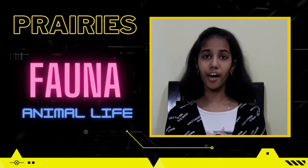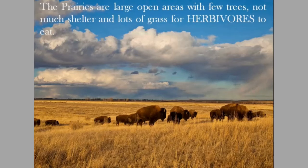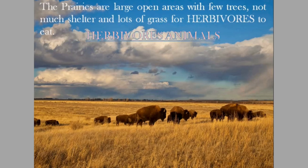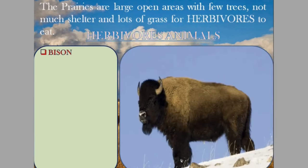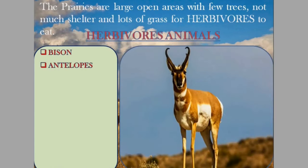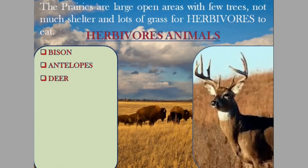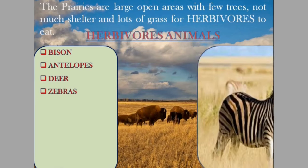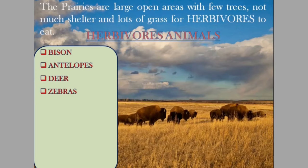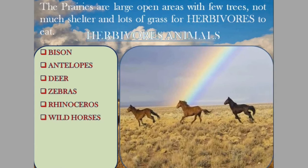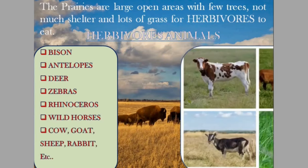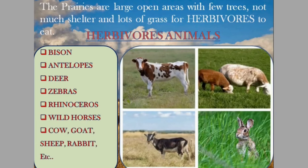Now let's understand the fauna of prairies. The prairies are large open areas with few trees, not much shelter, and lots of grass for herbivores to eat. The herbivore animals found in prairies are bison, antelopes, deer, zebras, rhinoceros, wild horses, cow, goat, sheep, rabbits, etc.